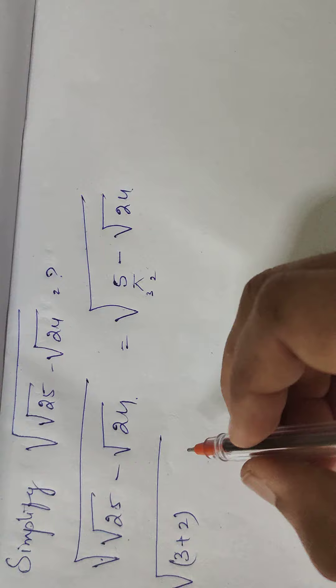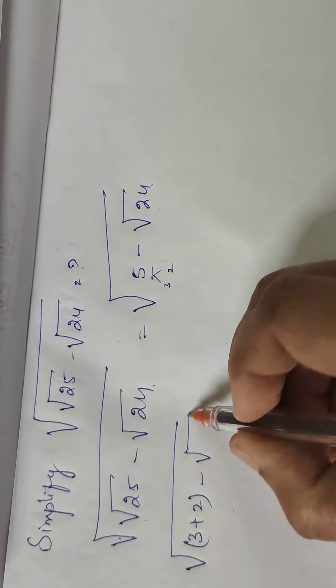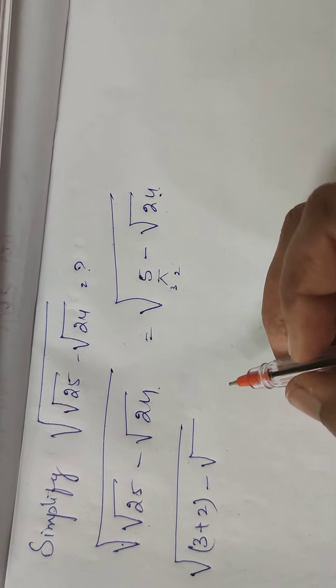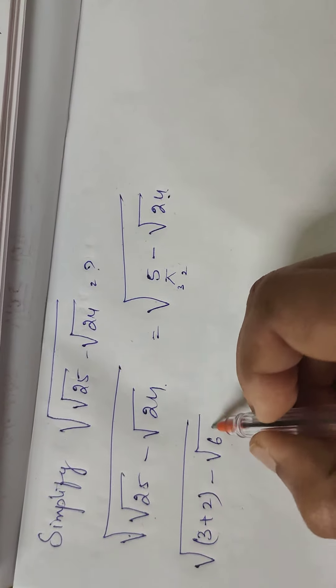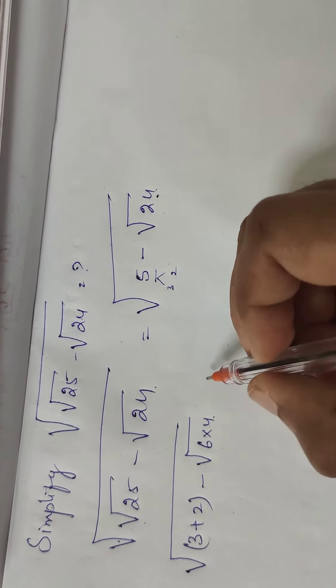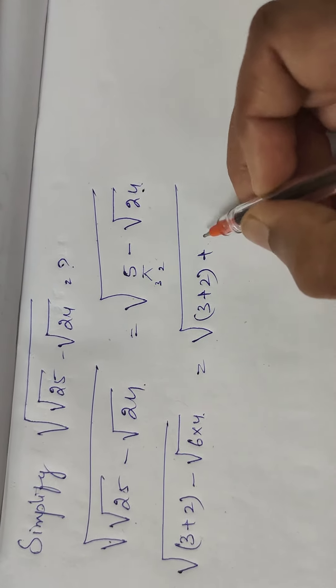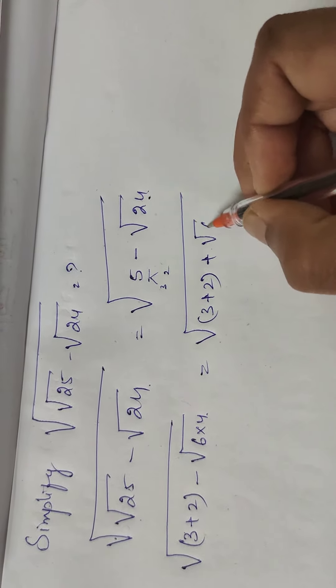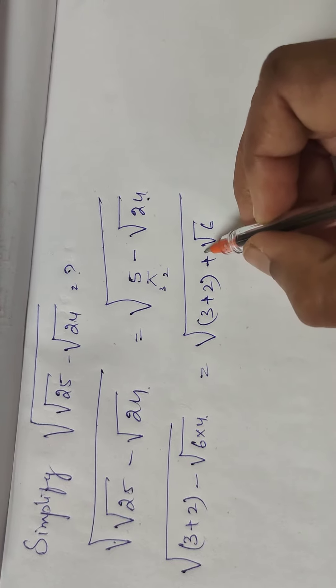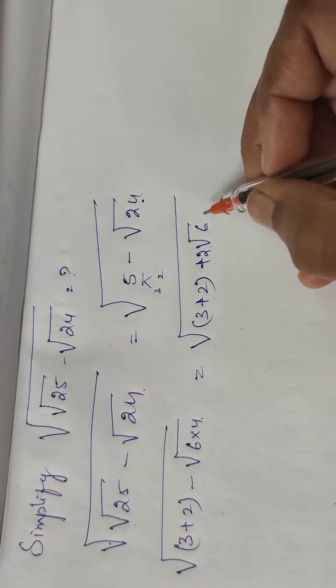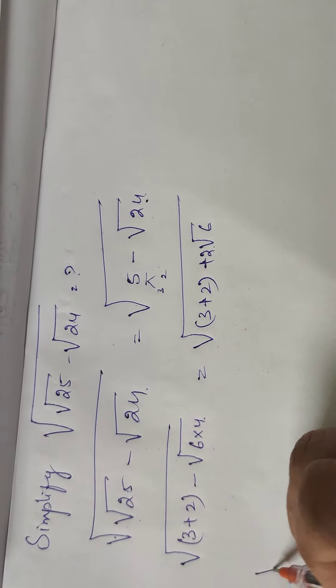So here is a small trick without using the calculator. We are going to solve it. Square root of 24: 6 times 4 is 24. So let us write it like that. Now 3 plus 2 square root of 6 is as it is, and the root of 4 is 2. We know this.